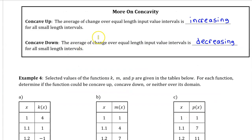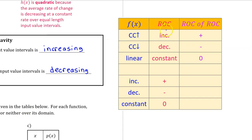In previous videos, we learned that a function is concave up if the average rate of change is increasing, and a function is concave down if the average rate of change is decreasing. That's the part of this chart that I want you to memorize, so pause the screen and study it right now.